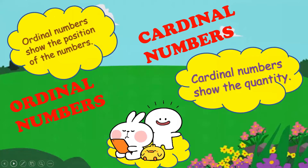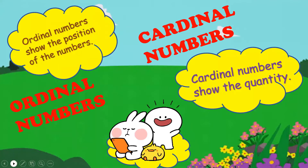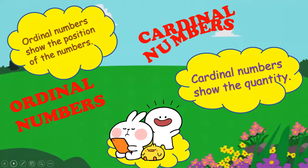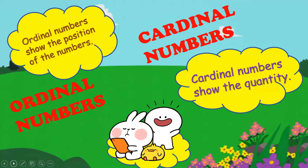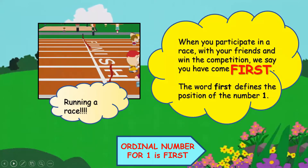Ordinal numbers show the position of numbers, whereas cardinal numbers show the quantity — for example, one, two, three, and so on. Ordinal numbers, on the other hand, define the position of the number.